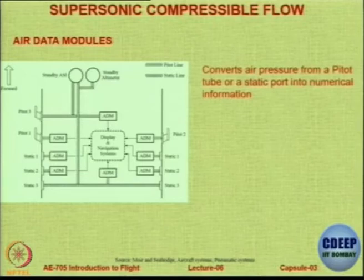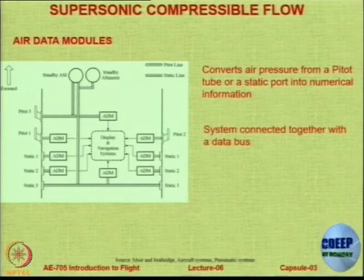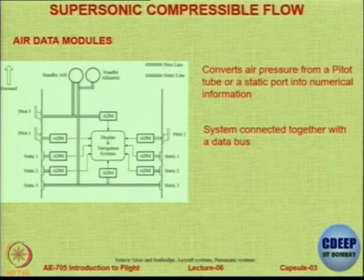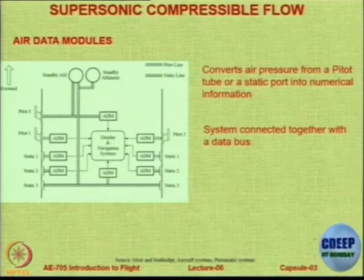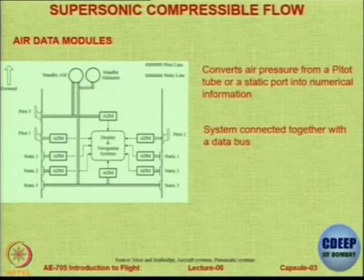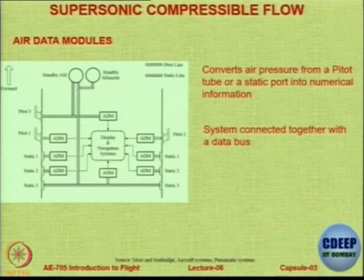What does the ADM do? The ADM converts air pressure from a pitot tube or a static port into numerical information, and this system is then connected together electronically by a data bus. As you can see in this example, there are three pitot tubes — two on the left-hand side (pitot tubes 1 and 3) and one on the right-hand side. There are also three static ports on the left and three on the right, all coupled together so that the average value can be taken. Each probe has an ADM system attached which converts the pneumatic reading into a digital reading and sends it to the display and navigation system.